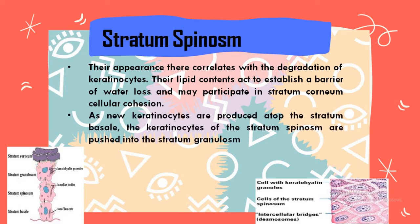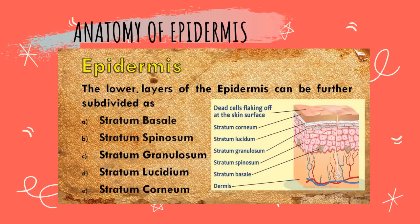As new keratinocytes are produced atop the stratum basale, the keratinocytes of the stratum spinosum are pushed into the stratum granulosum. This is all about the second layer of the epidermis. Now we are moving forward to the third layer, which is called the stratum granulosum.